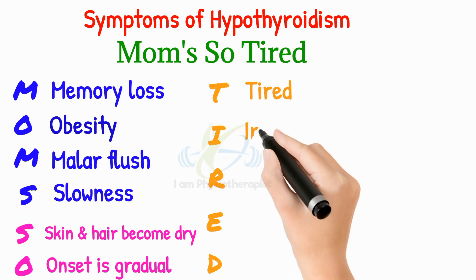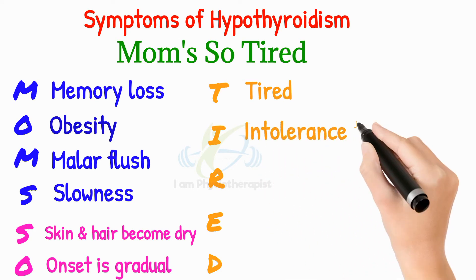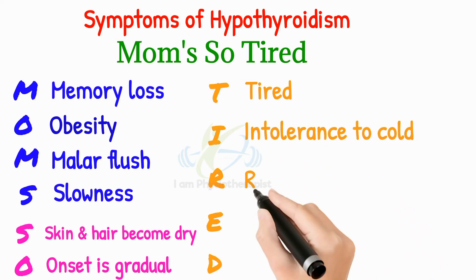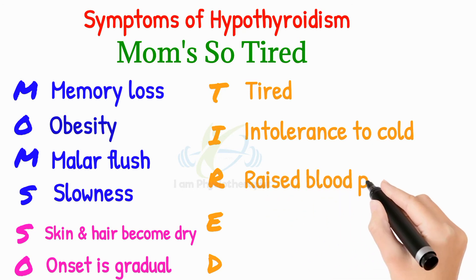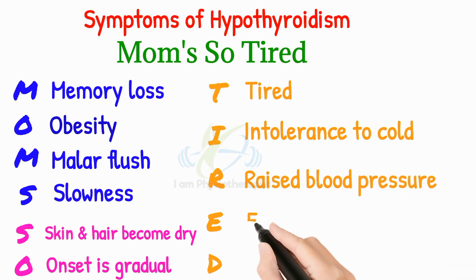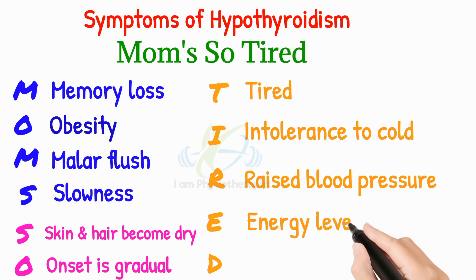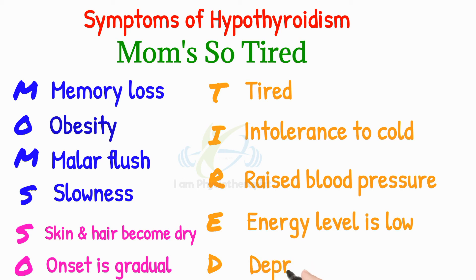I stands for intolerance to cold. R stands for raised blood pressure. A stands for energy level — patients with hypothyroidism have low energy levels. D stands for depressed.